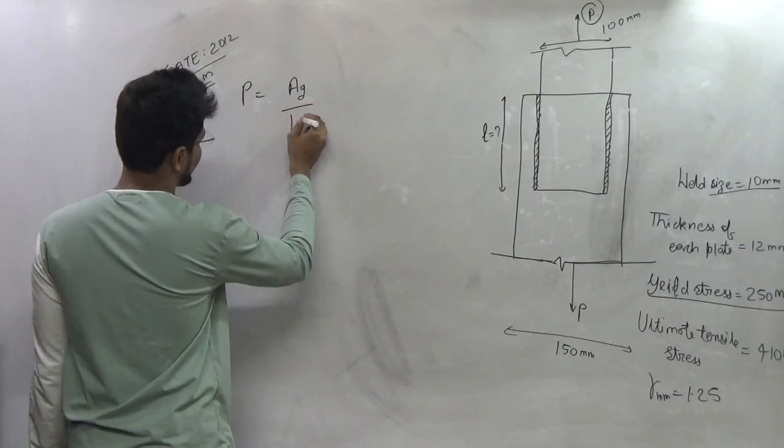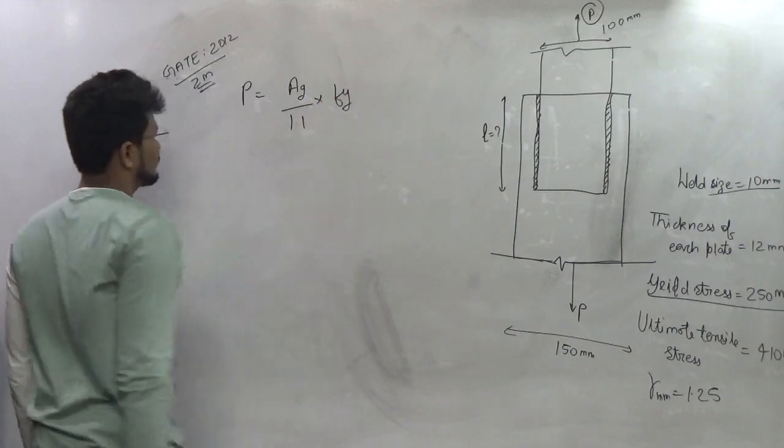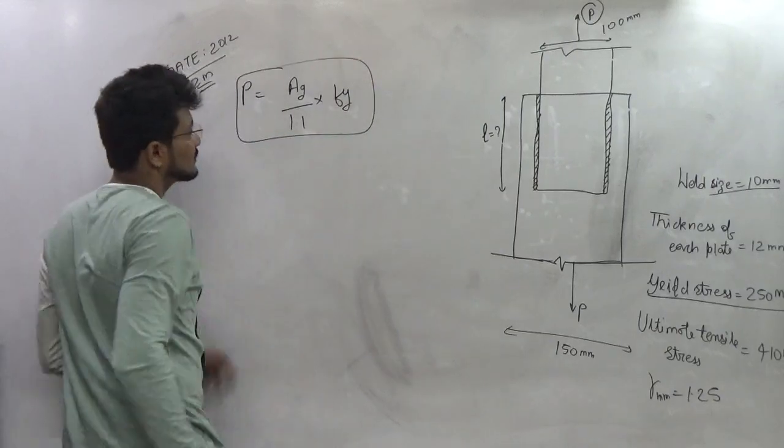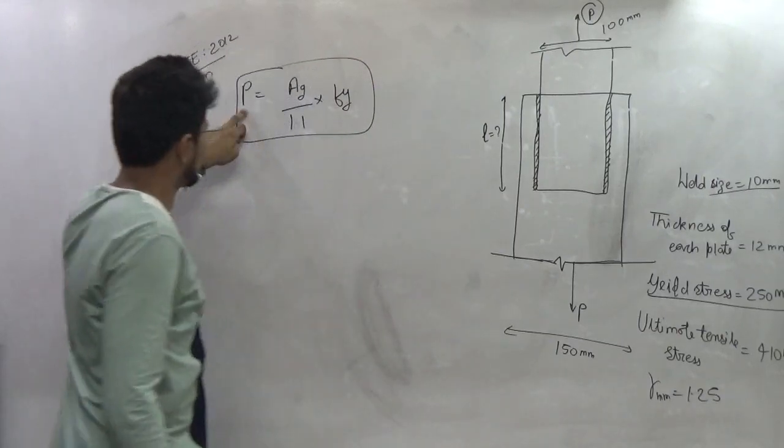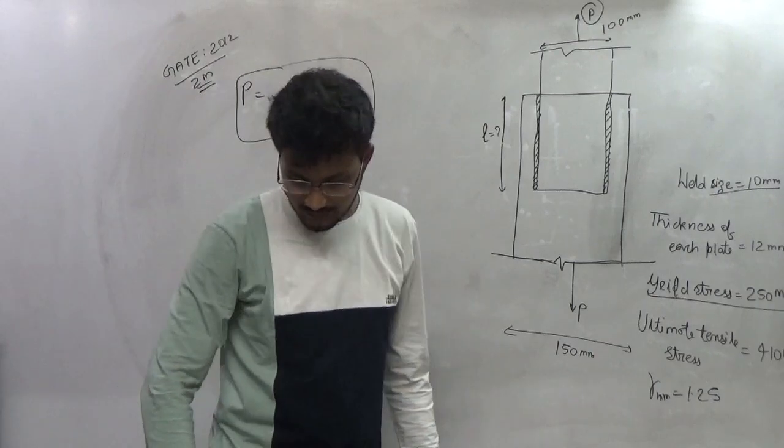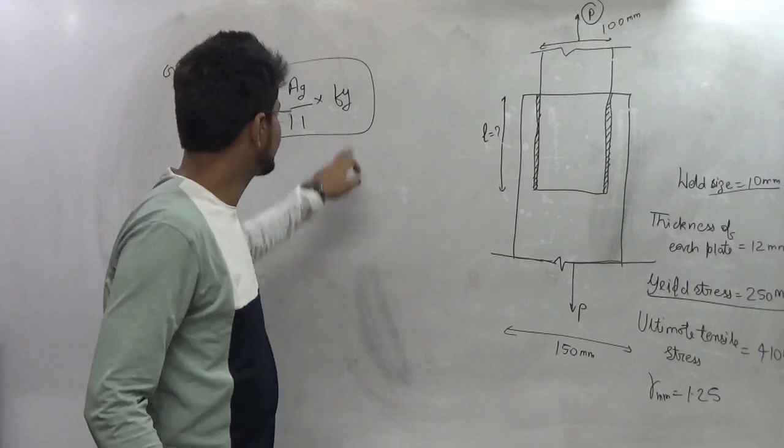Ag upon 1.1 into Fy. This is the formula which gives us the, with the help of this formula we can find out the load that can be transmitted with this particular plate.